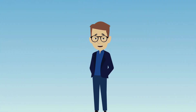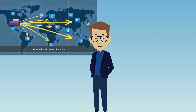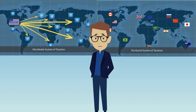Recall that we said in part one that the U.S. follows a worldwide system of taxation for U.S.-based multinationals, but that most of our global trading partners follow a territorial system. We discussed how large U.S. corporations felt they were at a competitive disadvantage globally by having to pay the higher U.S. corporate tax rate on their entire worldwide income.